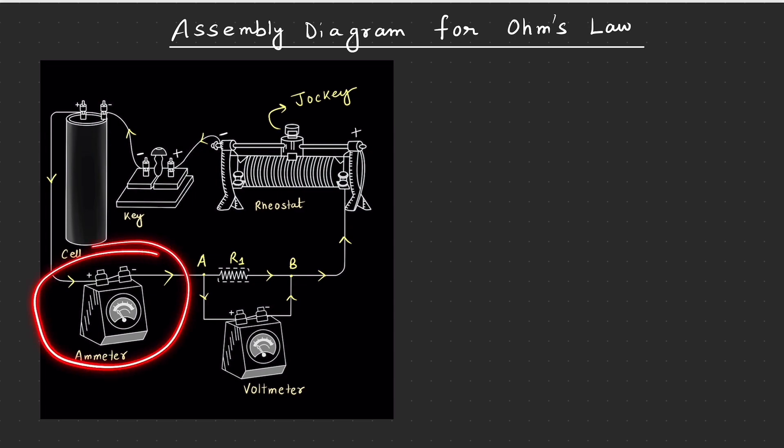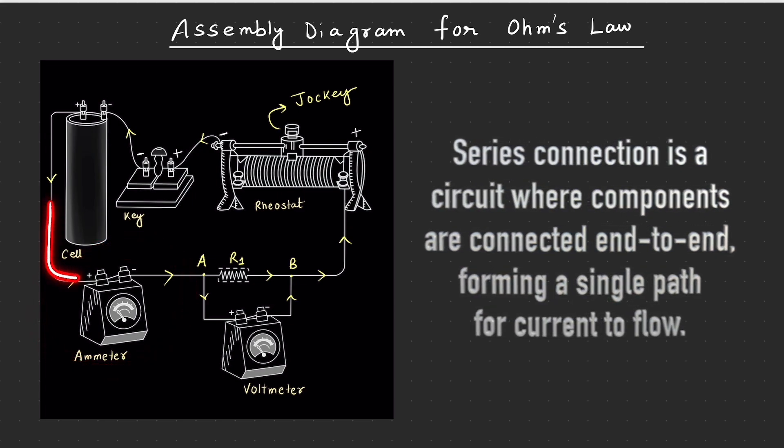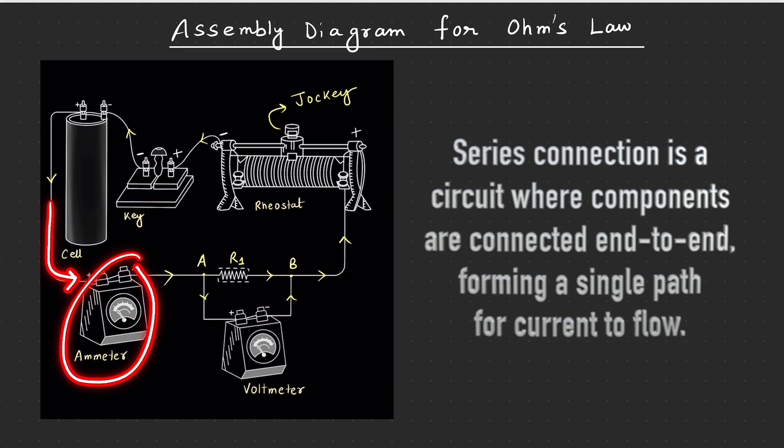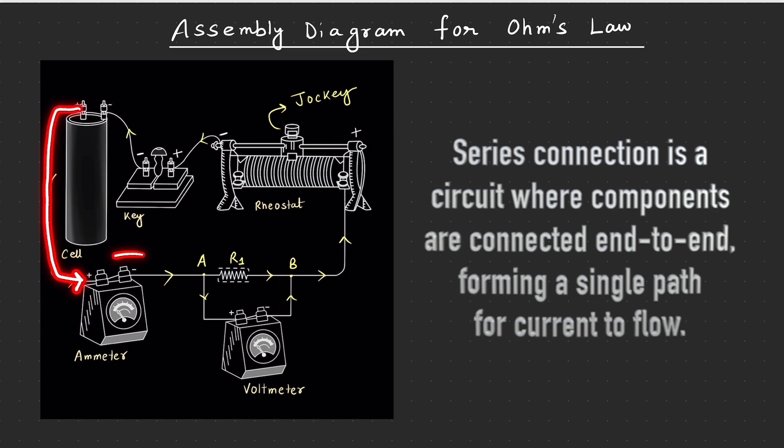You have also learnt about circuit diagram which we are going to discuss in a separate video. As of now, we have two more things to understand in this one. Number one is series connection. So the entire current jab kisi particular instrument ya appliance se pass kar raha hai, then this kind of connection is called a series connection. Ek jage se nikal raha hai and mandatorily the entire current has to flow through the second appliance. Ye series connection ka property hai.